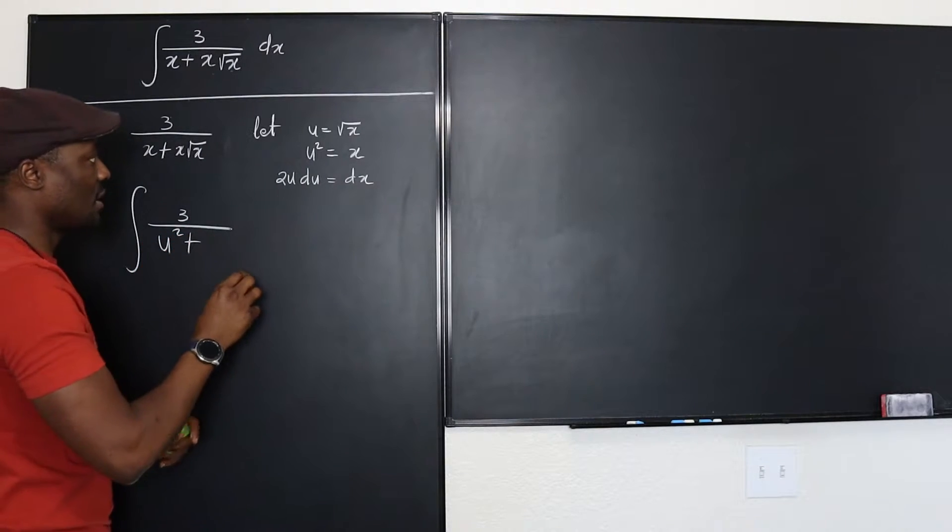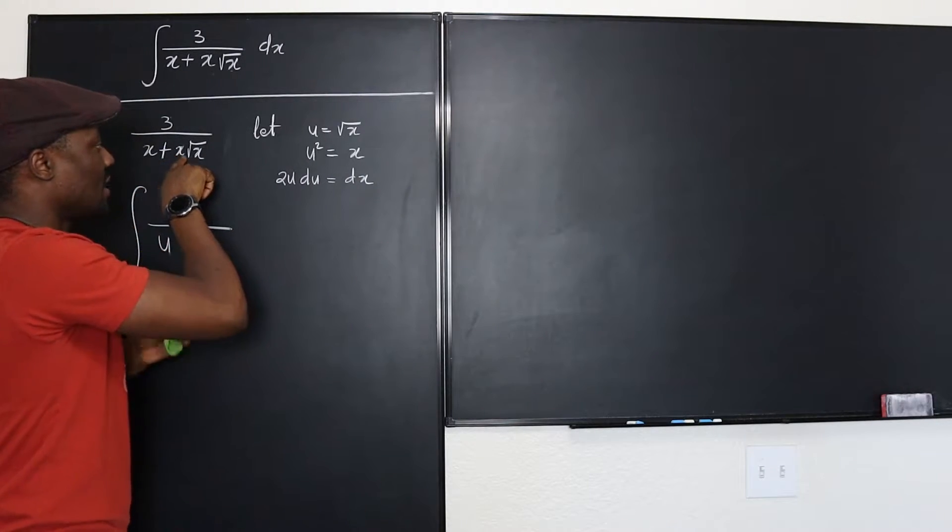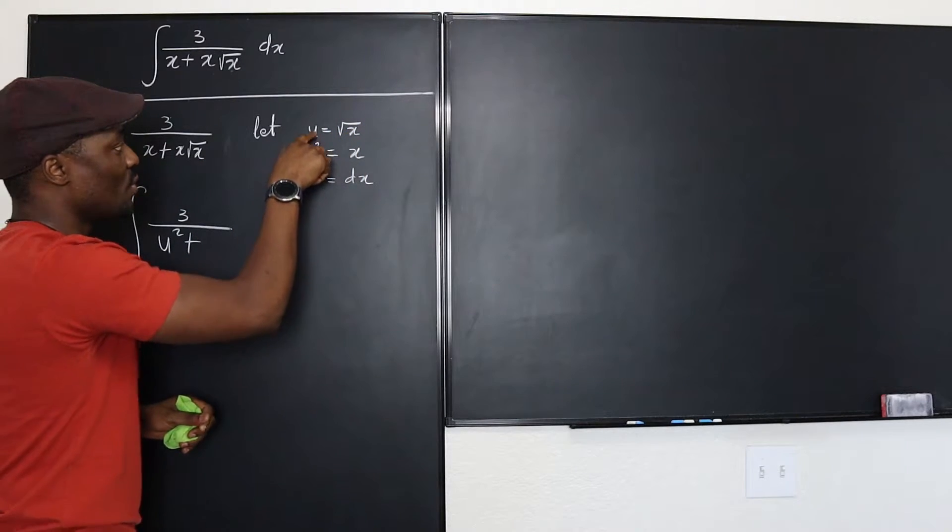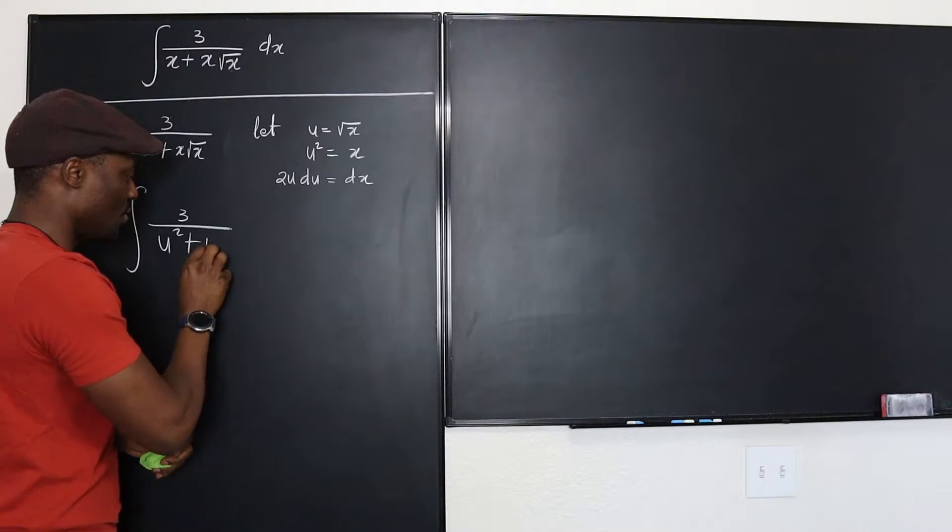I'm going to write u squared plus x times square root of x, that's going to be u squared times u, that's going to be u cubed.